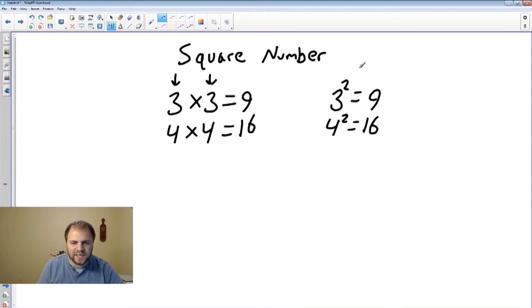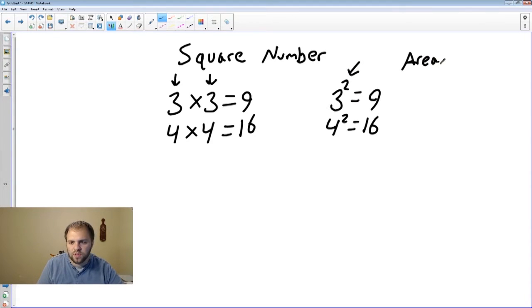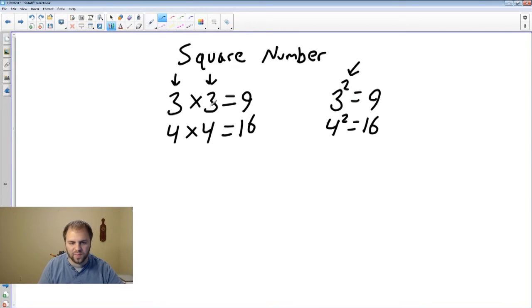3 times 3 can also be written as 3 squared equals 9 or 4 squared equals 16. Now you're probably thinking I've seen this symbol somewhere else. Well most often you've seen that symbol with area where you've had centimeters squared. So we're going to use that same symbol because what it is is very simple. It's saying we got a square here. This 3 is being squared. It's being multiplied with itself.